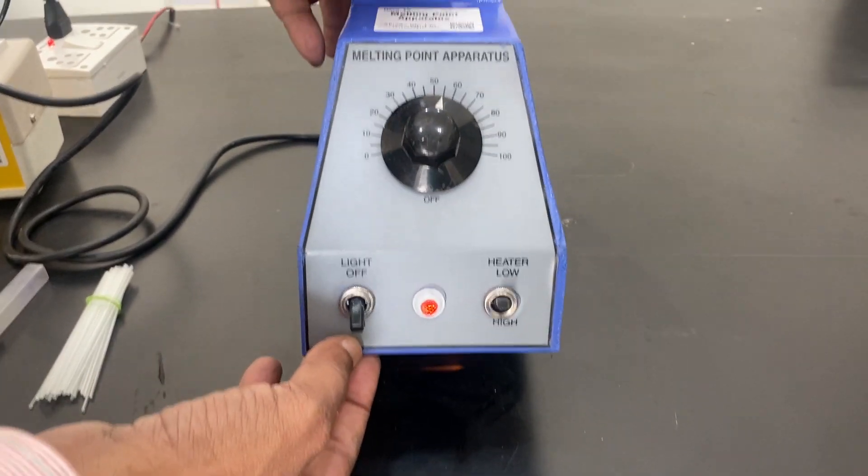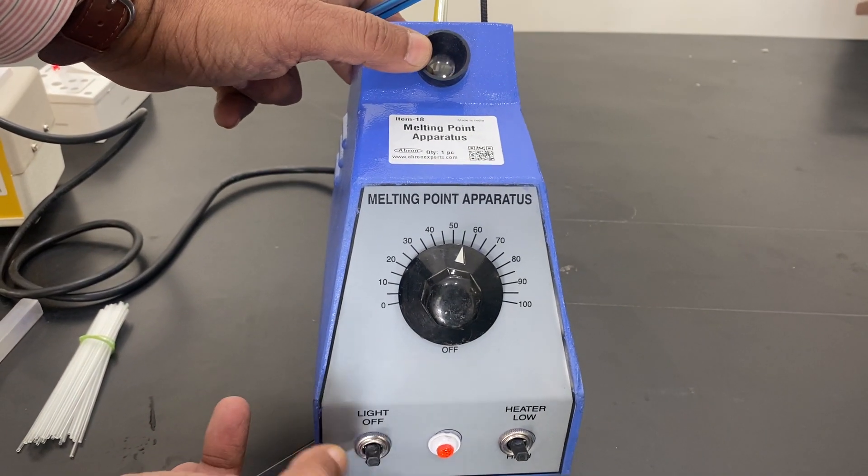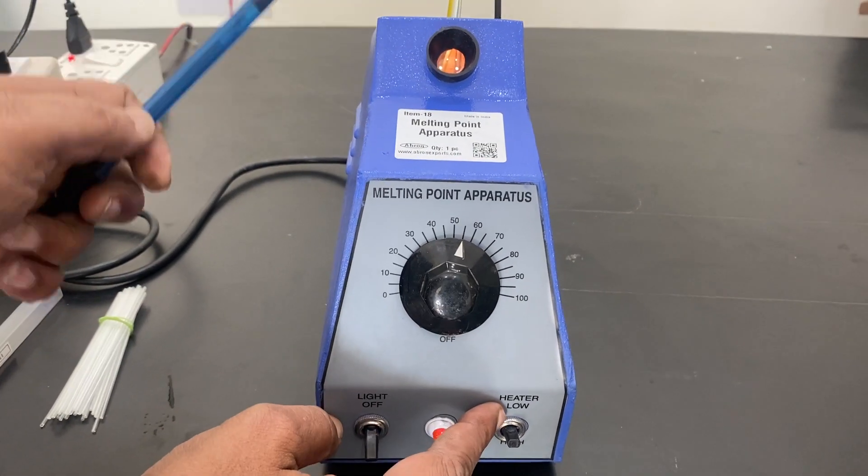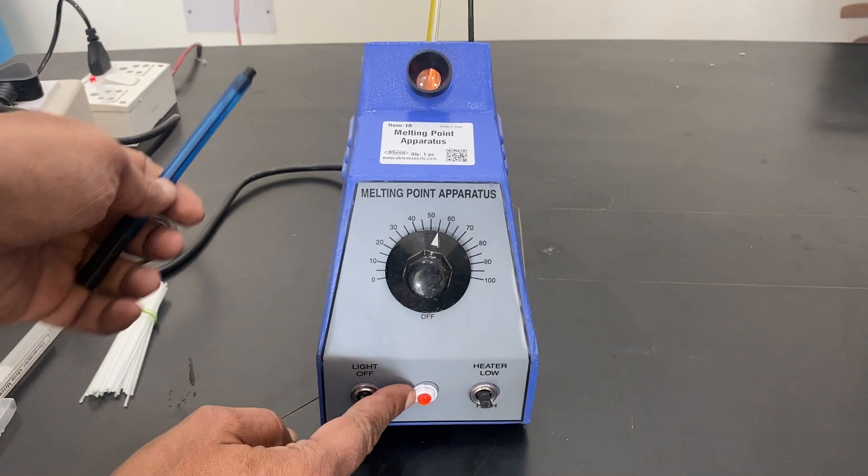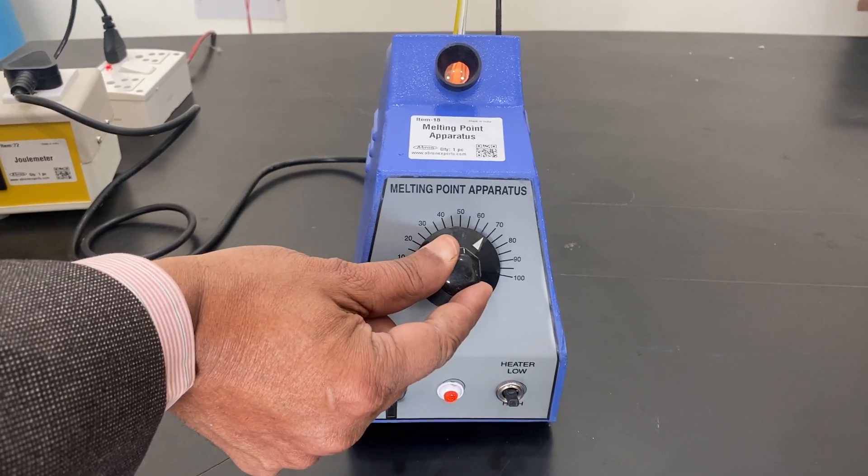This is on/off for the light. As you can see, the light inside - you can turn it on and off. There is low heating and high heating. The red indicator tells you heating is going on. If you increase it...